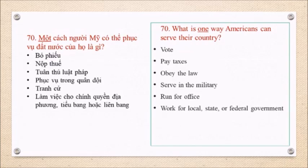Question 70: What is one way Americans can serve their country? Vote. Pay taxes. Obey the law. Serve in the military. Run for office. Work for local, state, or federal government.